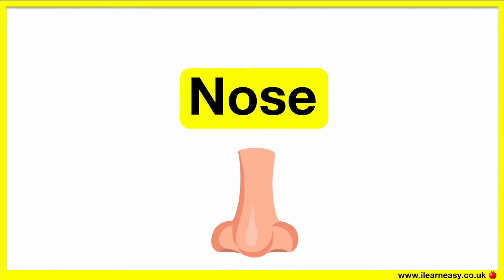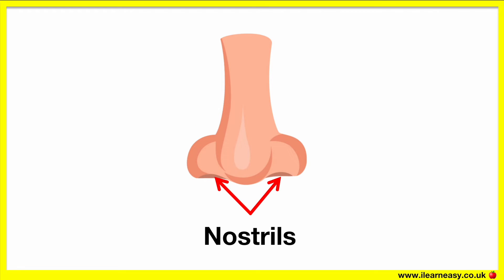Our nose helps us to smell. The nose is part of the respiratory system. The entrance of the nose are the nostrils, which are separated by the septum. The septum is made up of cartilage, a thin piece of skin and bone. If you wiggle your nose, you'll be able to move the cartilage around.